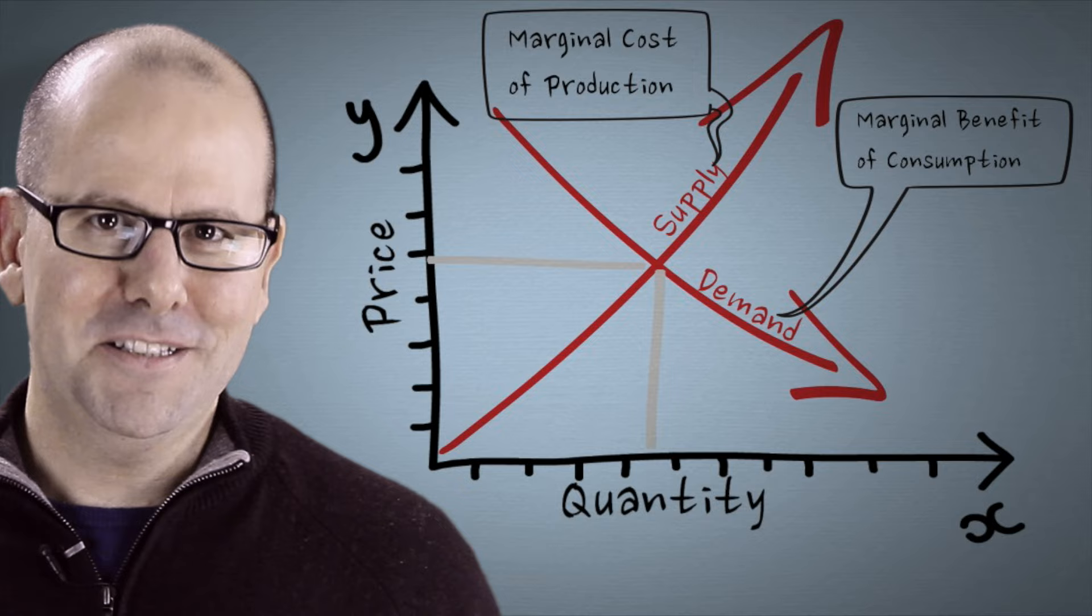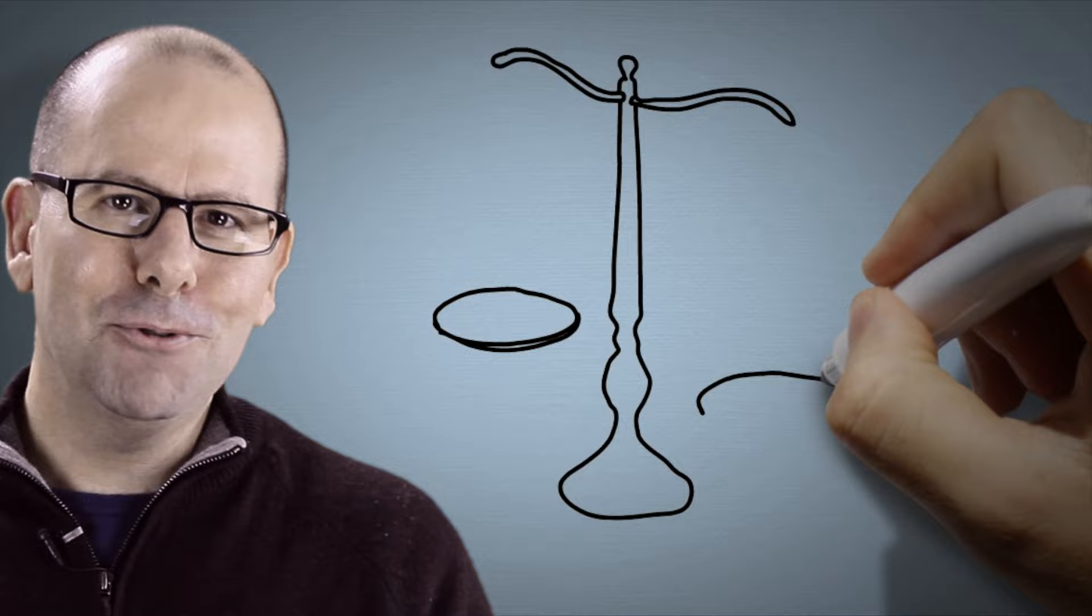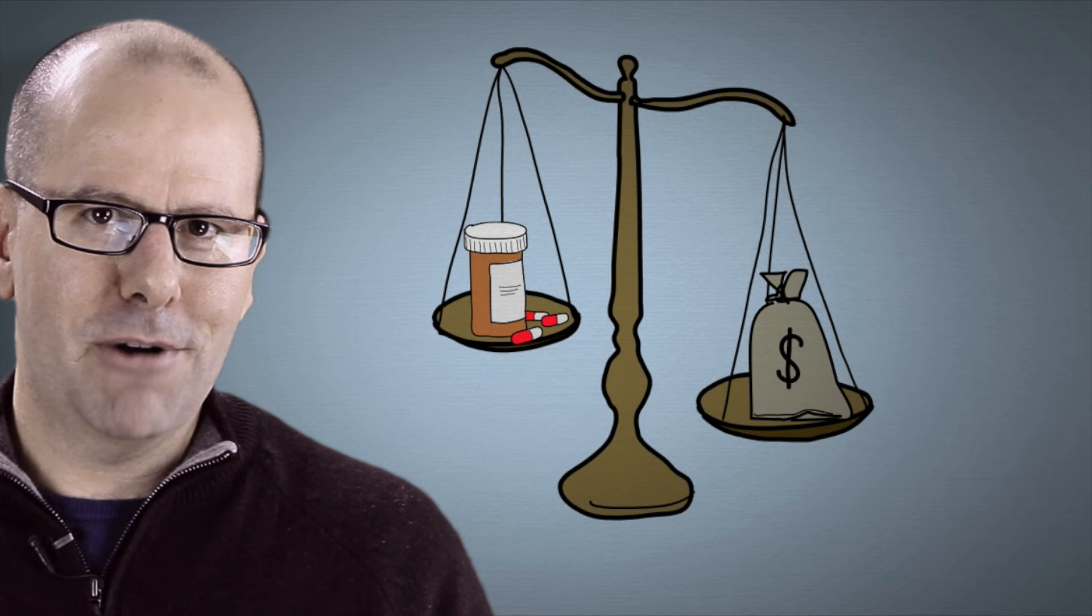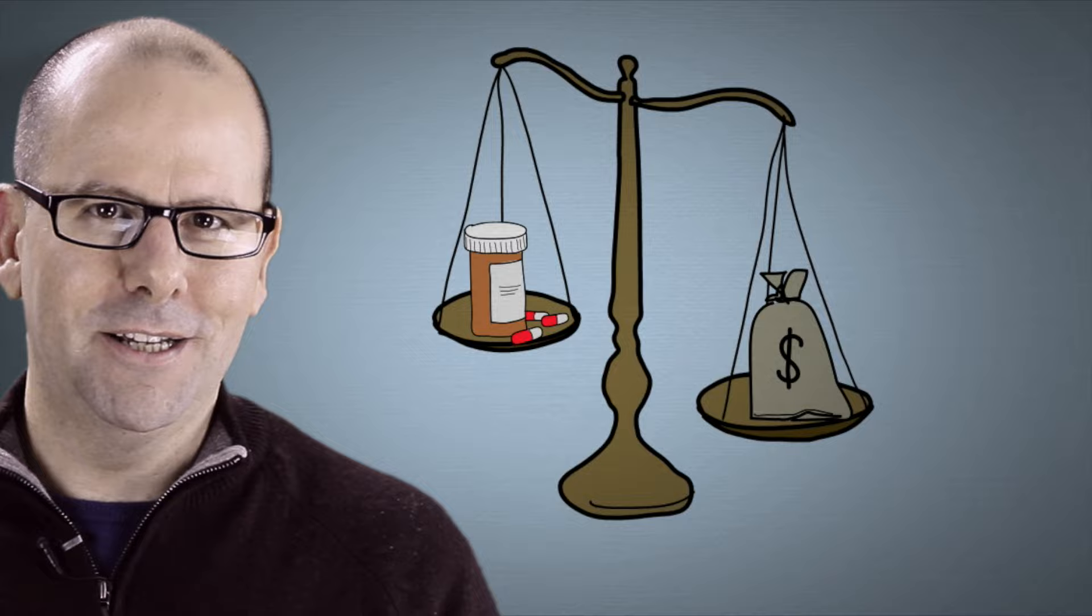Governments need to make decisions about how to spend their healthcare budget. They're interested in getting the most bang for their buck, but they're also interested in things like distributive justice and providing care for the poor. Incidentally, I've got a video on distributive justice, and I'll provide a link for that in the description below this video. Governments need to make decisions like, are they going to rely on private healthcare provision, or should healthcare be free at the point of service? And if so, which services should be included?